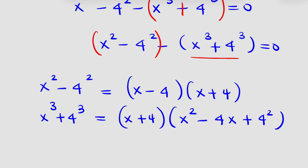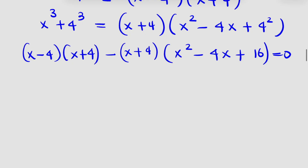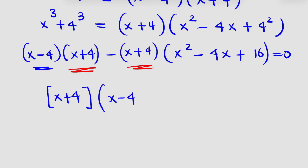Now, let us put them back into the equation. So I have (x minus 4)(x plus 4) minus (x plus 4)(x squared minus 4x plus 16) equals 0. A closer look will tell us that (x plus 4) is common in this expression, and we can factor it out. We are left with x minus 4 minus (x squared minus 4x plus 16) equals 0.